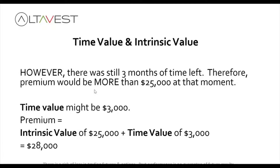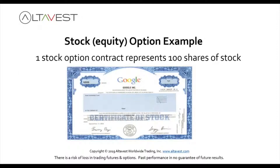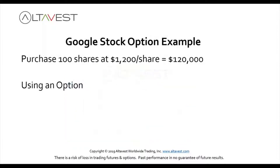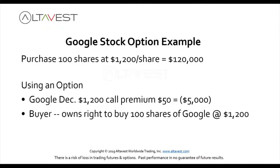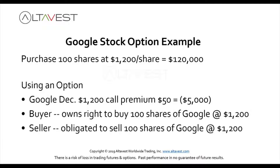Now let's look at stock options. The key point here is that one stock option represents 100 shares of stock. If you wanted to buy 100 shares of Google at $1,200 a share, that would cost $120,000. However, using an option — let's say the $1,200 call was trading at $50 — remember there are 100 shares, so that's $5,000. The buyer would own the right to buy 100 shares of Google at $1,200, and the seller of that option would be obligated to sell 100 shares of Google at $1,200.